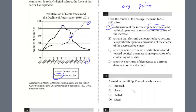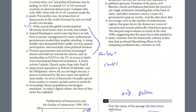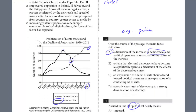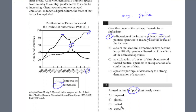Question 11 asks what 'put' means in line 20 — this is a word in context. Try to predict before looking at choices so you don't get biased. Reading for context: 'Compare that with 1989, when only 69 of 167 countries made the grade. Put another way, the proportion of democracies in the world increased by just over half in only two decades.' Here 'put' means said another way or phrased another way. Looking at the choices — not 'imposed,' not 'placed,' not 'incited' like to incite a riot — it's 'stated.' The answer is D.